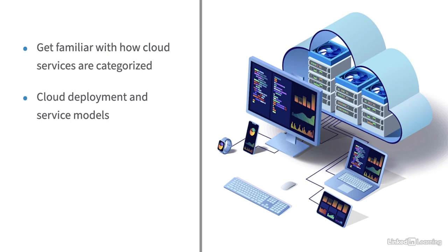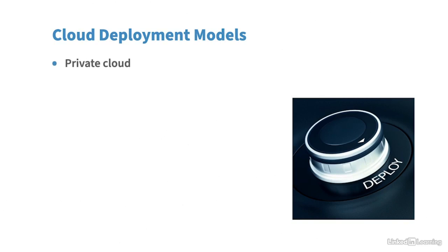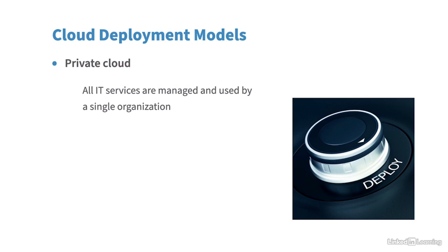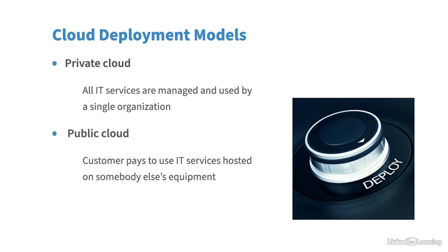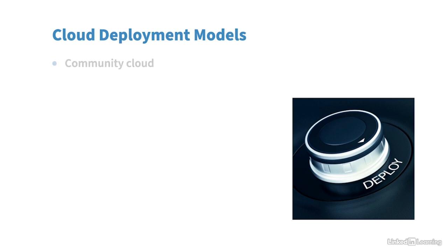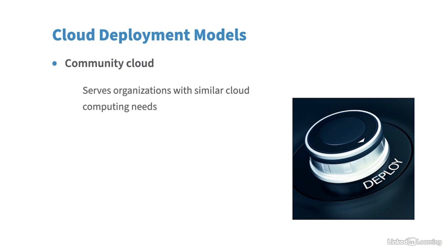Let's look at some deployment models. A private cloud means one organization owns and runs it — all IT services are managed and used by that one organization, giving them full control and flexibility. In a public cloud, the customer pays to use IT services hosted on somebody else's equipment in a data center; examples include Amazon Web Services, Microsoft Azure, and Google Cloud Platform. A community cloud is designed to serve organizations with similar cloud computing needs, such as the medical industry or government — for example, Microsoft Azure for Government, which meets security standards required by U.S. government agencies.